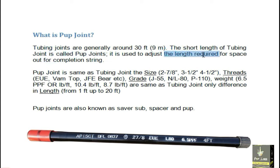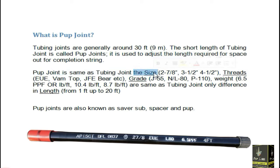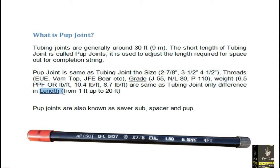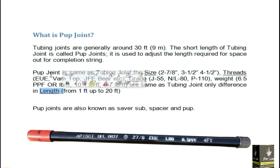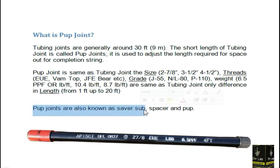The pup joint is used to adjust the length required for space out for completion string. The pup joint is the same as a tubing joint — the size, thread, grade, and weight should be the same as the tubing joint. The only difference is in the length. So you can say that the pup joint is a smaller piece of a tubing joint. Pup joints are also known as the saver sub.